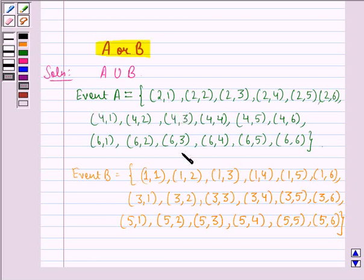Now we see that this is the sample space for event A, that is getting an even number on the first die. And this is the sample space for event B, that is getting an odd number on the first die.